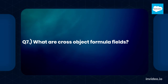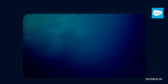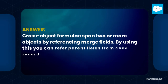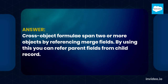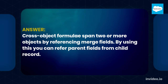Q7. What are cross-object formula fields? Cross-object formulas span two or more objects by referencing merge fields. By using this, you can refer to parent fields from a child record.